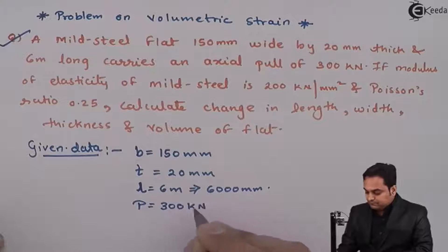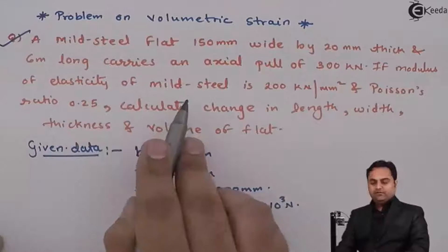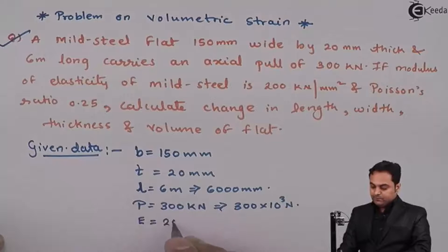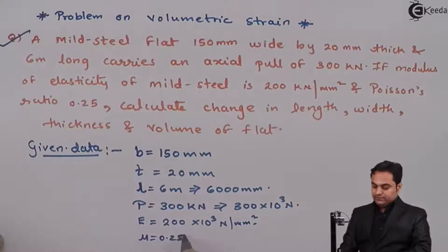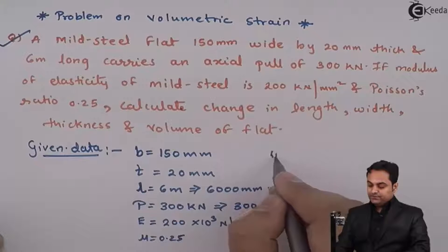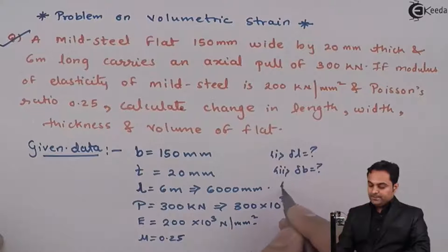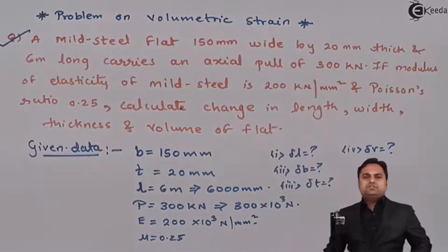It carries an axial pull of 300 kilonewton, which is 300 × 10³ Newton. Modulus of elasticity E is 200 kilonewton per mm² (200 × 10³ N/mm²), and Poisson's ratio μ is 0.25. The questions are: calculate change in length, change in width δB, change in thickness δT, and change in volume.